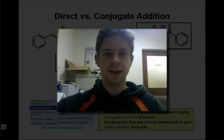Given an alpha-beta unsaturated ketone substrate, how do you decide whether the nucleophile that it reacts with is going to react in a 1-2 or direct versus 1-4 or conjugate fashion?